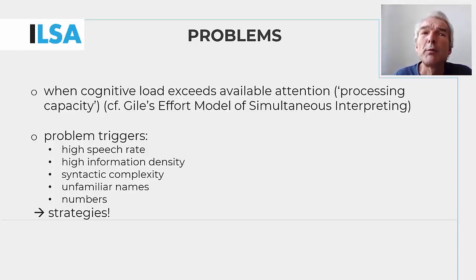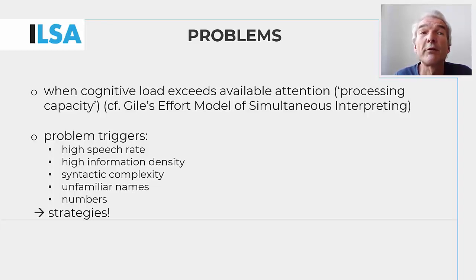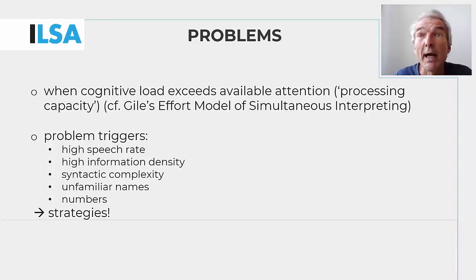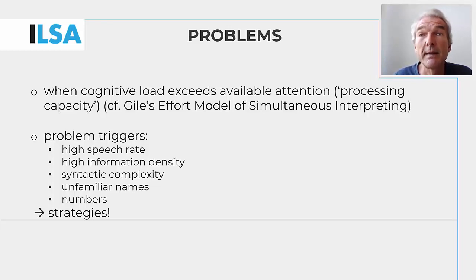Some of these problem triggers are known. They include high speech rate and information density, syntactic complexity, and unfamiliar names and numbers. Some ways of coping with these problems have been described, and such ways of dealing with particular problems are often referred to as strategies. The acquisition of such strategies is a core element of the learning process for simultaneous interpreting, and underlies many of the exercises in this unit.